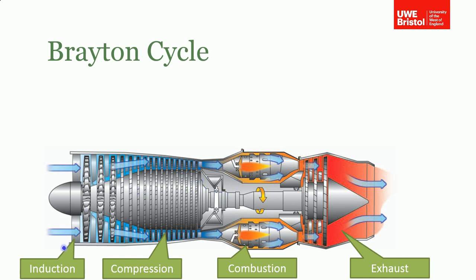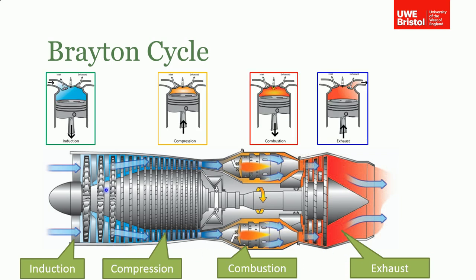So we've got the induction, compression, combustion, and exhaust parts of this cycle. You could roughly say it's analogous to a reciprocating engine in that we've got the induction stroke, compression stroke, combustion, and exhaust strokes — but in the gas turbine it's all happening continuously as you go through the device.